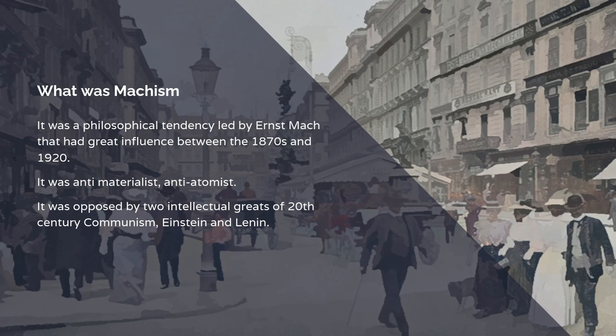What was Marxism then? It's a philosophical trend or tendency led by Ernst Mach, who is variously described as a great philosopher or a physicist. And it had a lot of influence between the 1870s and around 1920. And I would argue it had a lingering influence well beyond that in physics, due to the fact that people Marx had taught came themselves to be influential.